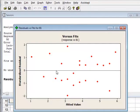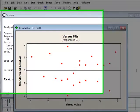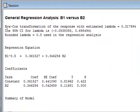If we now look at the numerical results, we see that the Box-Cox transformation has estimated lambda to be 0.317994, but that it will take the rounded value of 0.5 for use in the regression analysis.